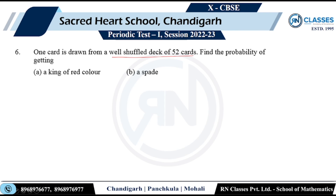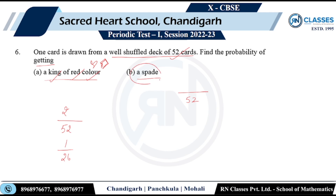One card is drawn from a well-shuffled deck of 52 cards. Total outcomes = 52. For a king of red color: it can be the king of hearts or king of diamonds, so 2 favorable outcomes. Probability = 2/52 = 1/26. For a spade: there are 13 cards in the spade suit, so probability = 13/52 = 1/4.